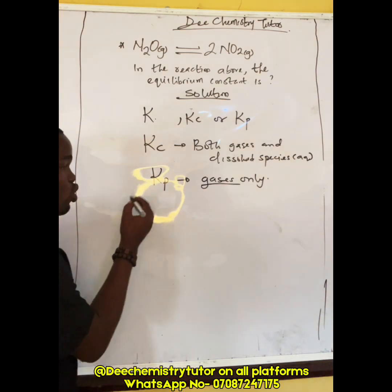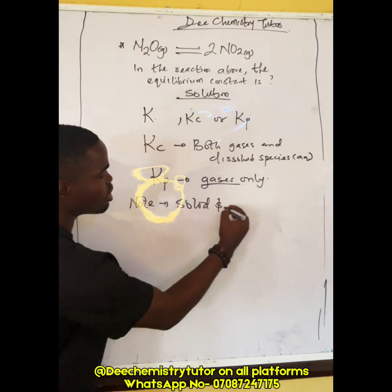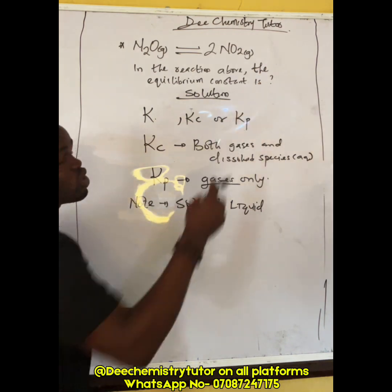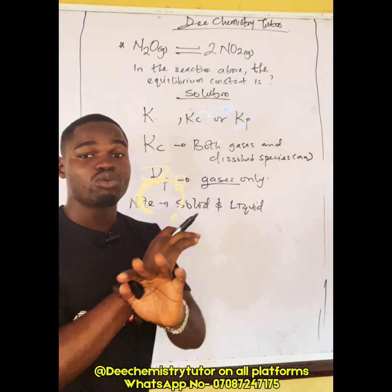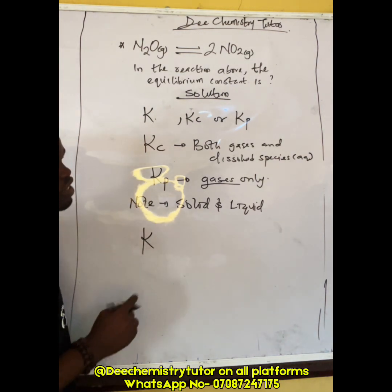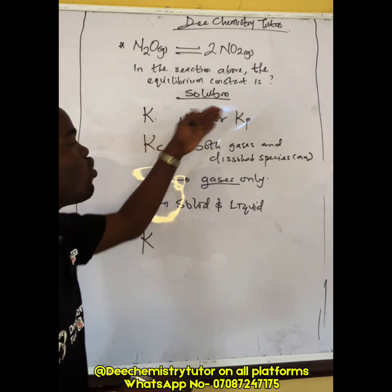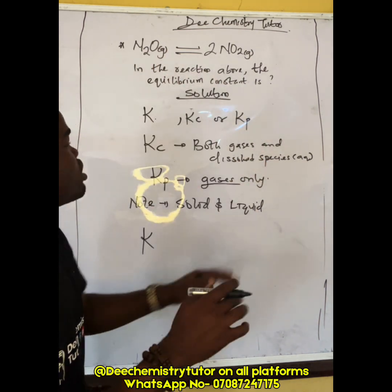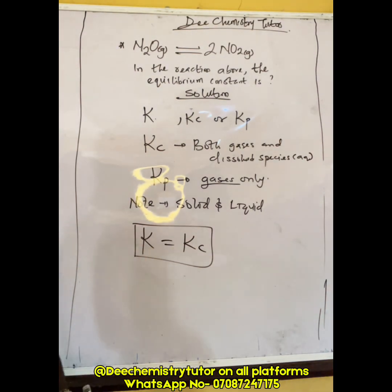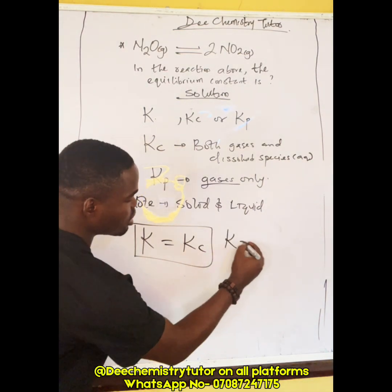Note that we do not write equilibrium constants for solids or liquids — when you see a solid or liquid, it is assumed to be one. In this question, since they did not specify which to write, you just write K, which is equivalent to Kc unless stated otherwise.